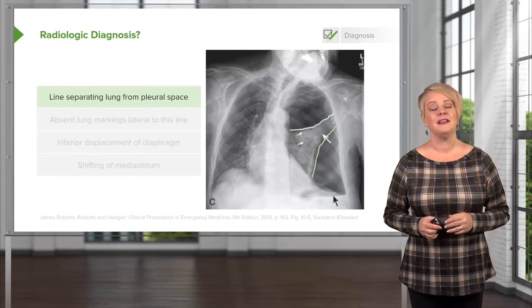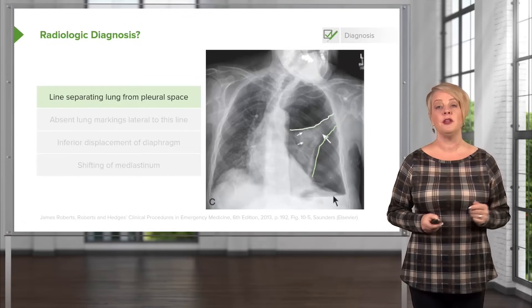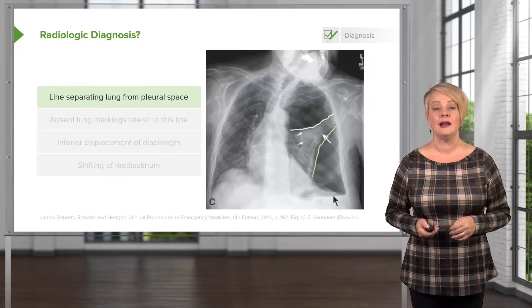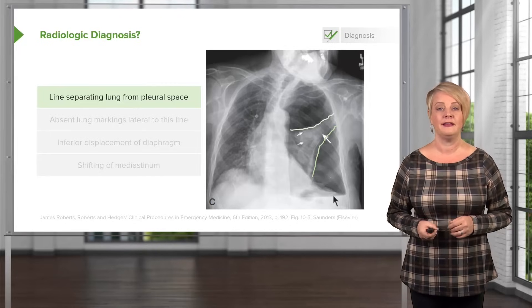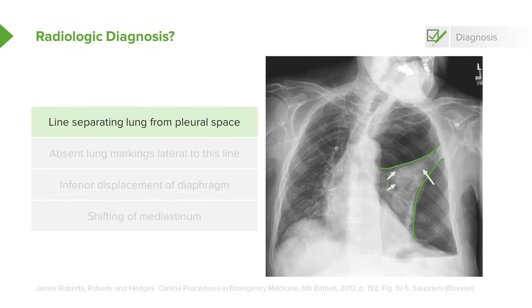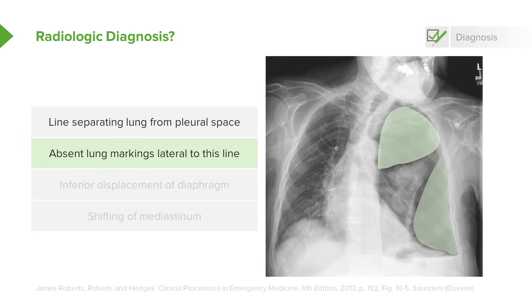Tension pneumothorax is not usually a radiologic diagnosis — it is diagnosed clinically. But if an x-ray is obtained, characteristic findings include visible separation of the lung from the pleural space, with regions showing no lung markings. You can see a line demarcating lung tissue from empty airspace, and inside the air collections there are no lung markings.